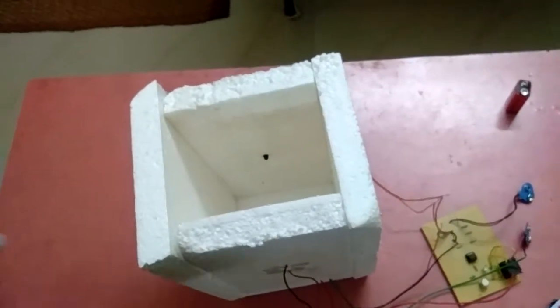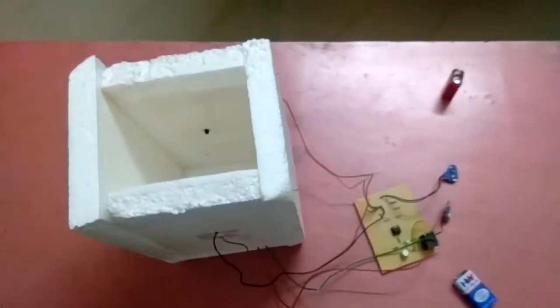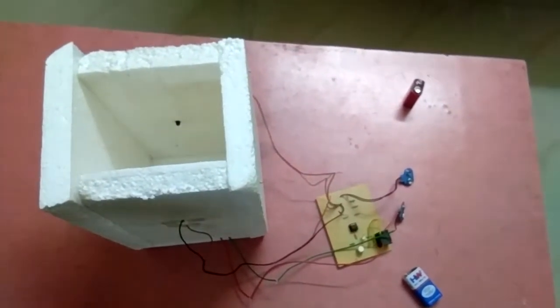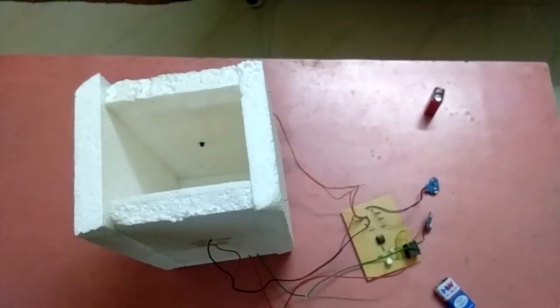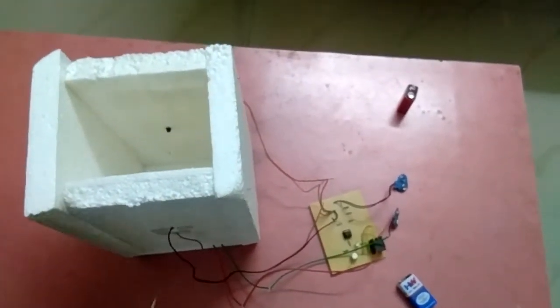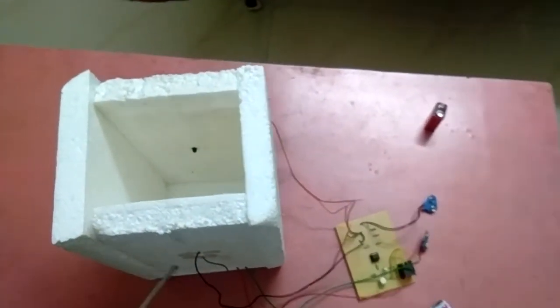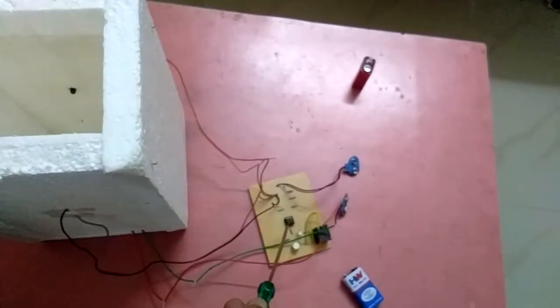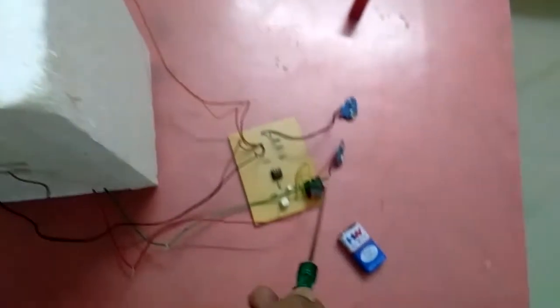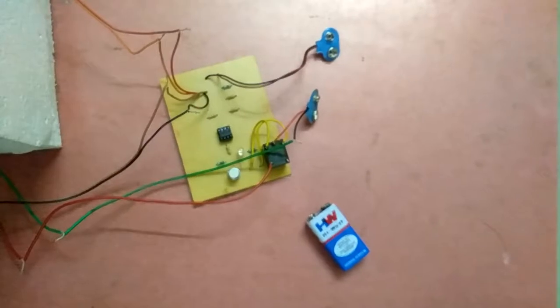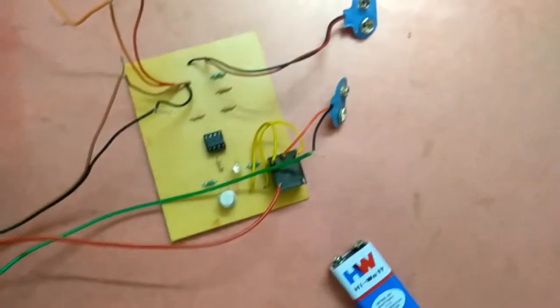Hello everybody, this is the mini project I have done. The name is Post Box Indicator. The components we have used in this mini project are an IR transmitter, IR receiver, comparator (op-amp), relay driver circuit, and two batteries. Let me show you how it works.